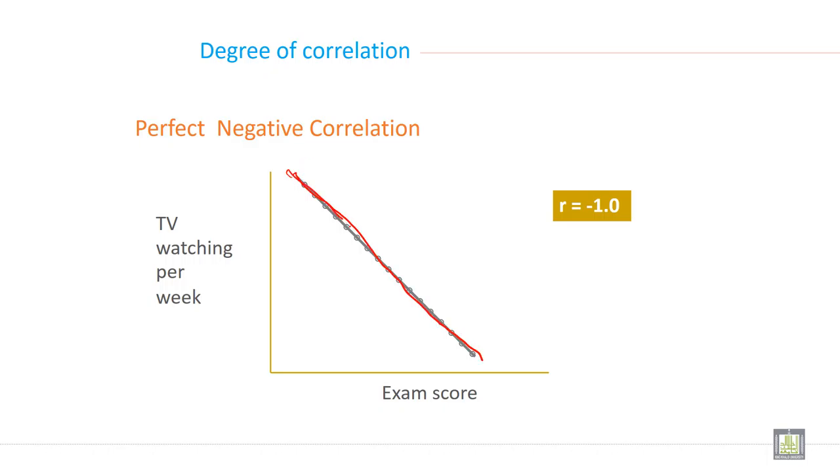Then perfect negative correlation, when all the dots are on a single line and line goes to the downward at the right. It starts from left and goes downward to the right, and all the dots on these lines, all the dots only on lines, not up and down on line.